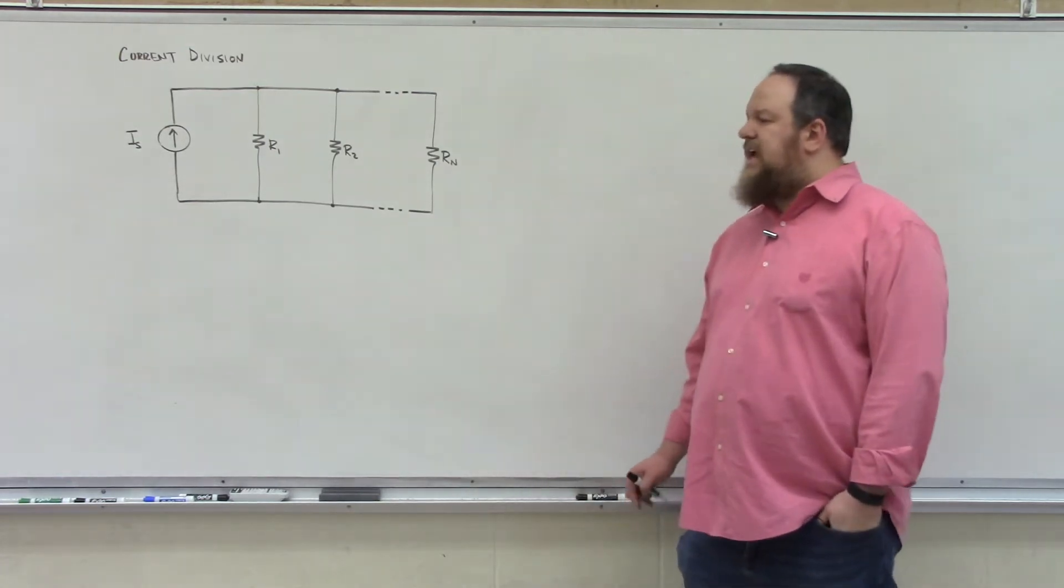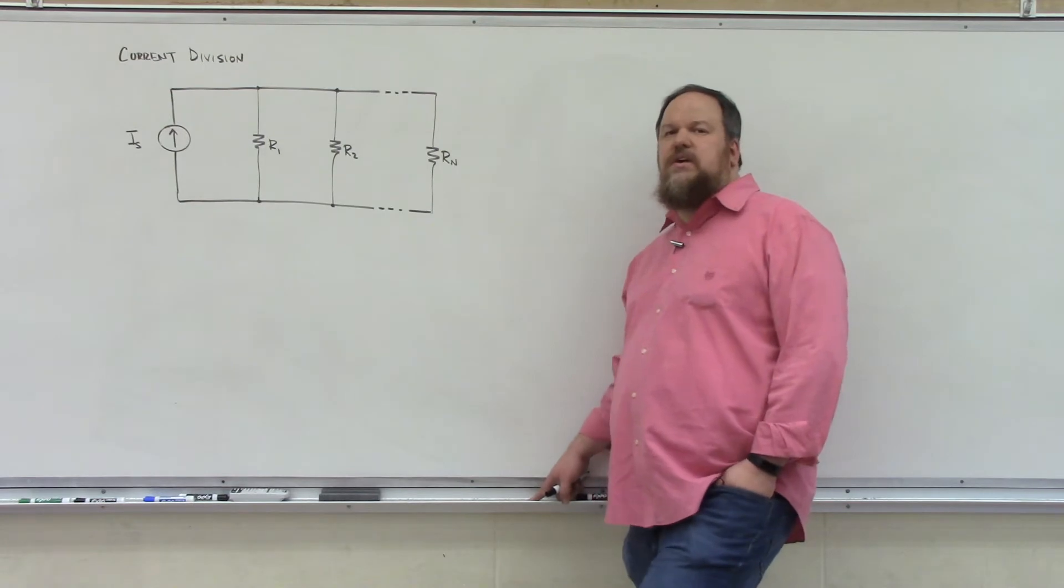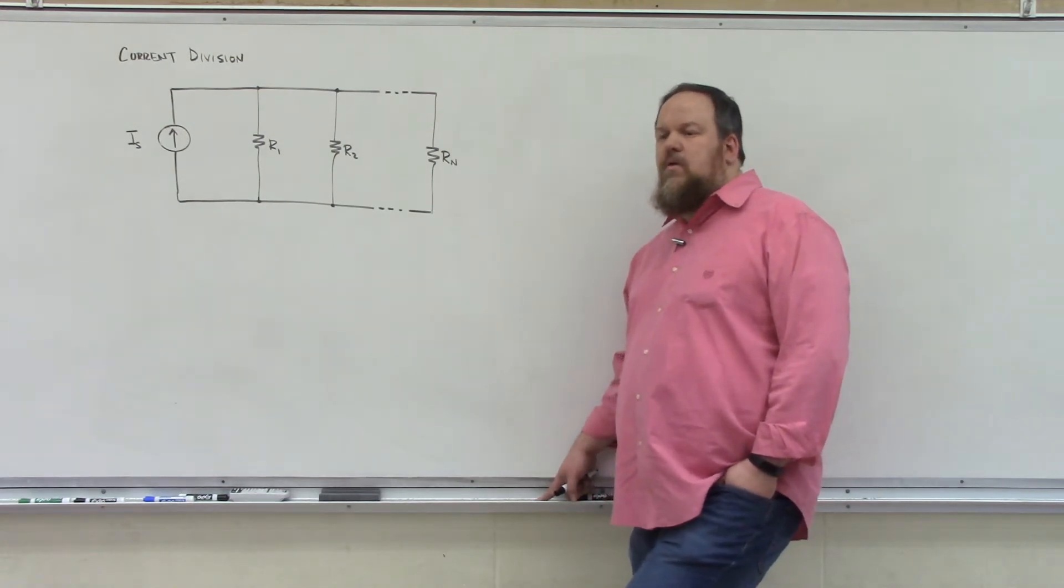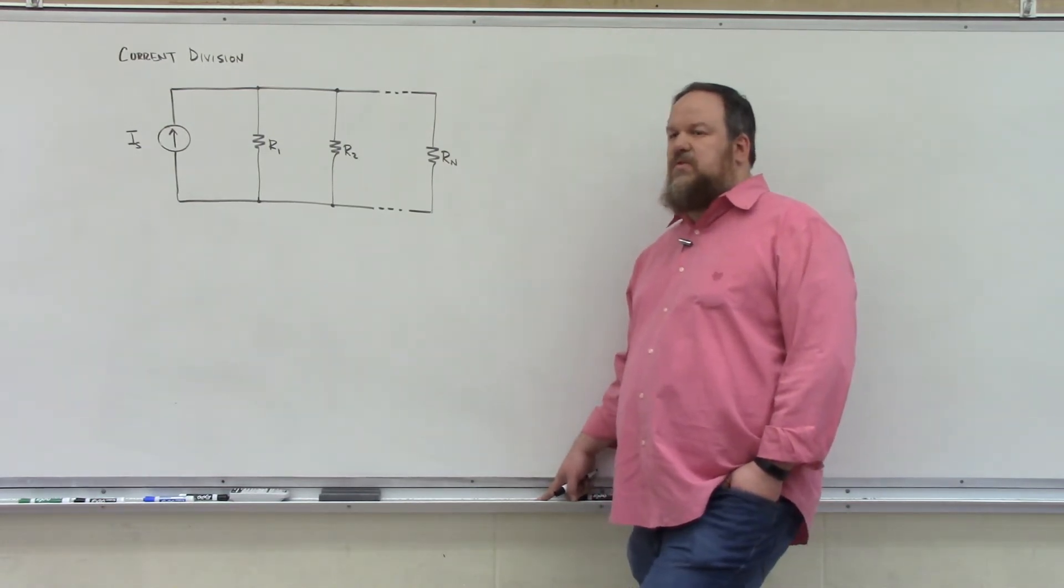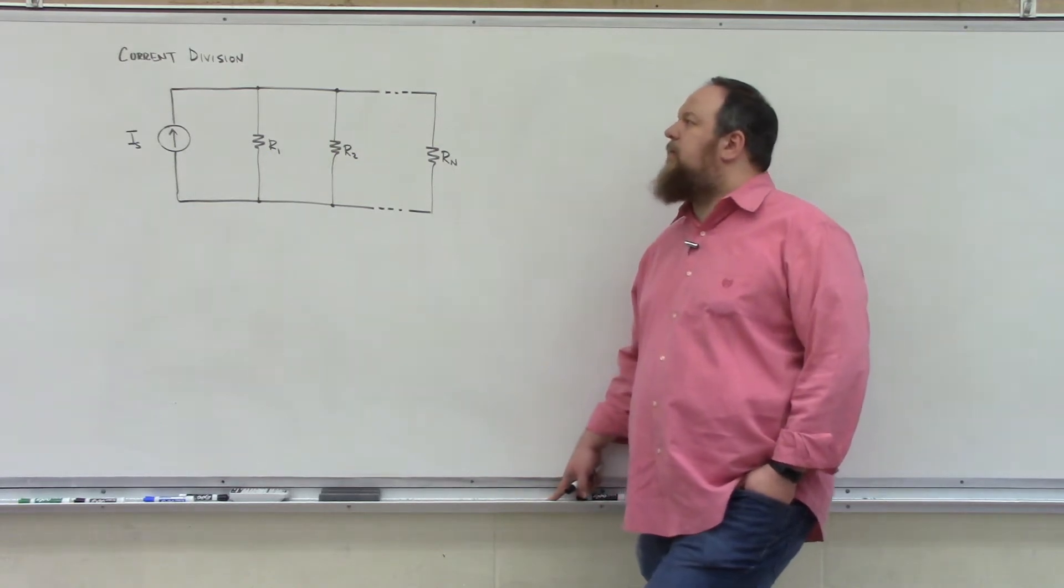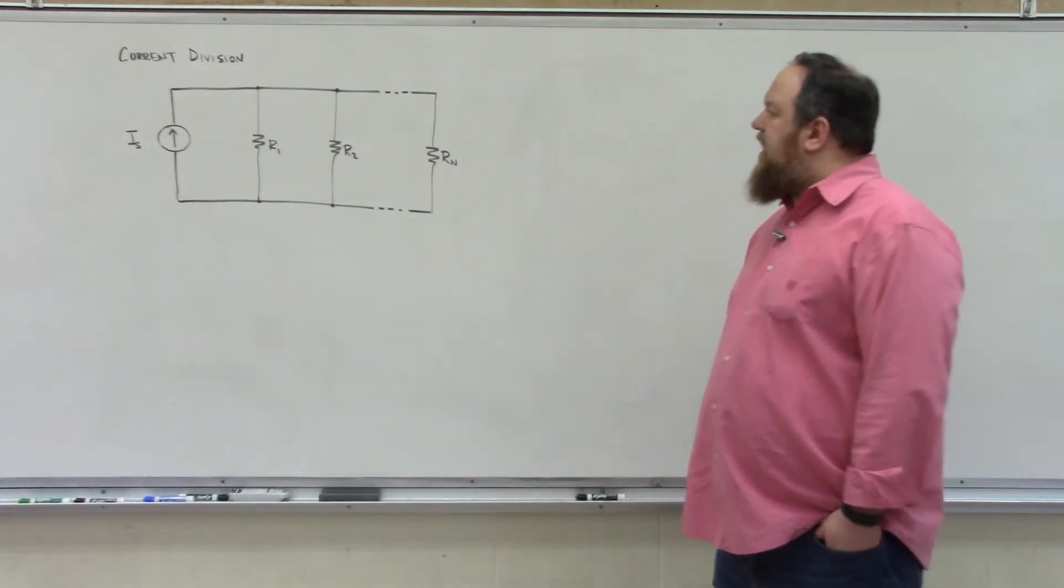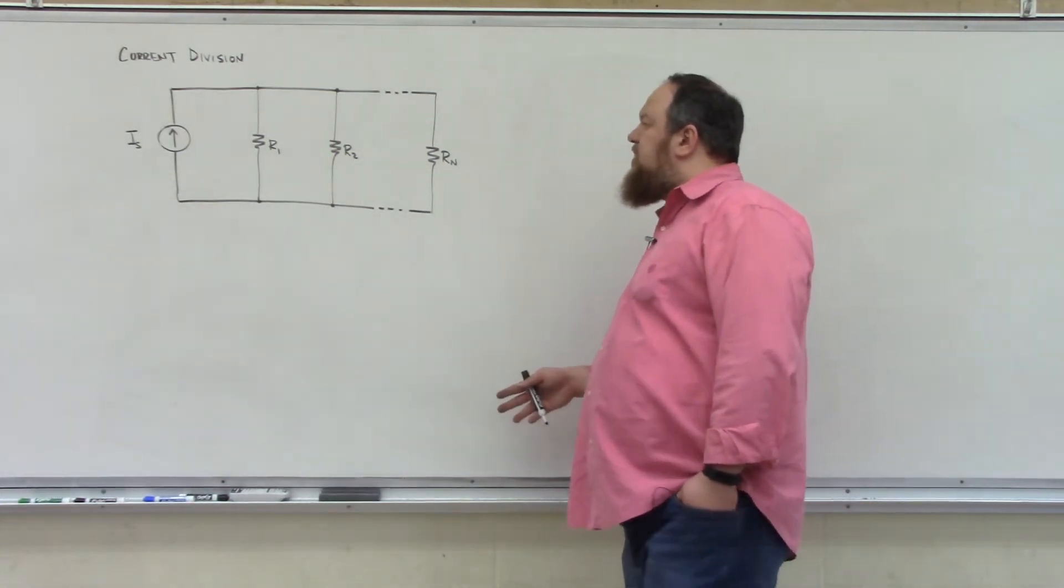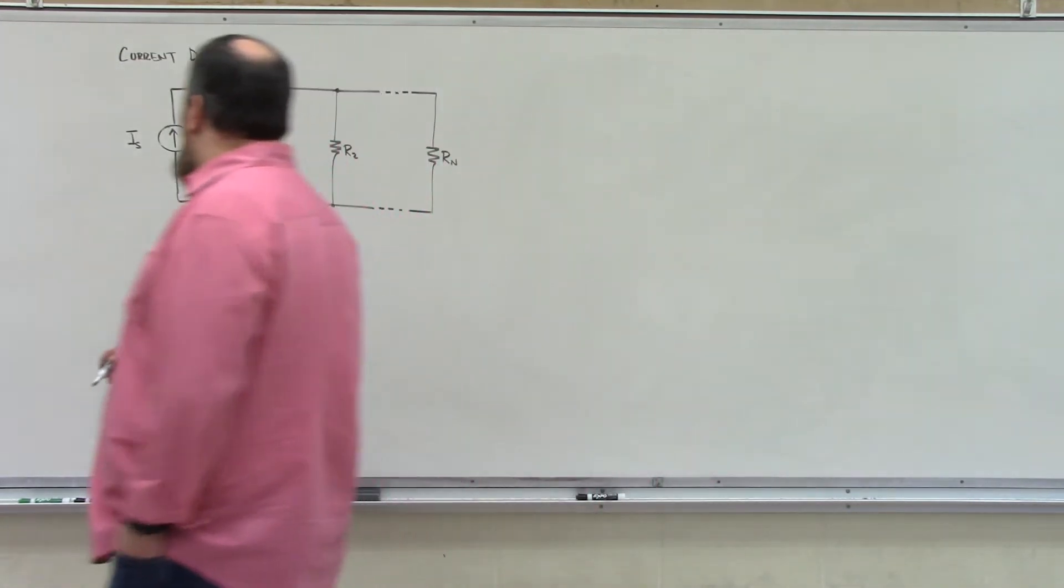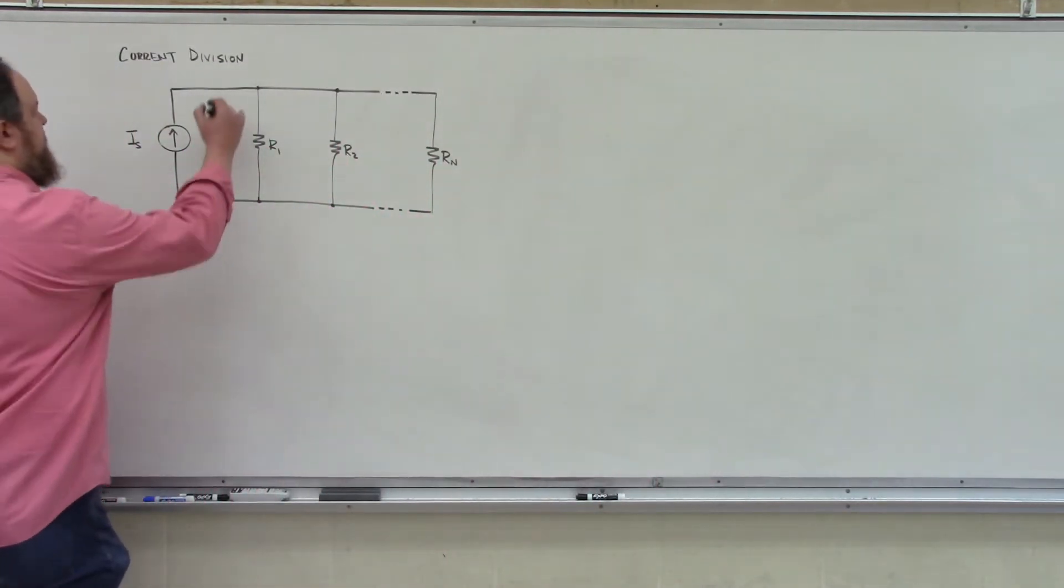We are going to start by looking at the single node pair circuit that we looked at when we were deriving the rules for combining resistors in parallel. We see that everything is in parallel, so we should have a common voltage V over all of these resistors.